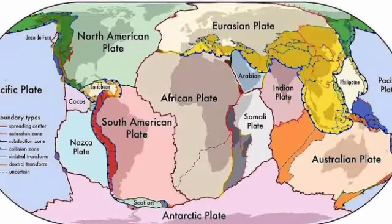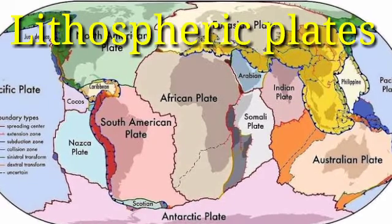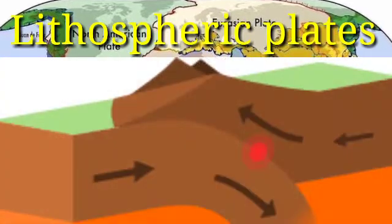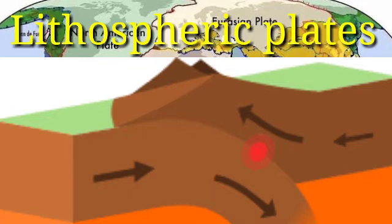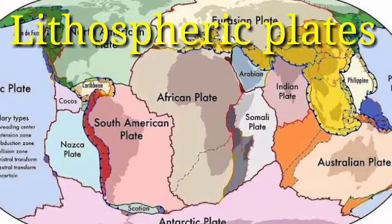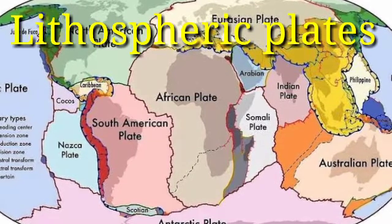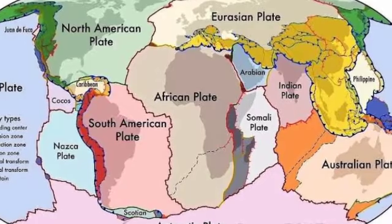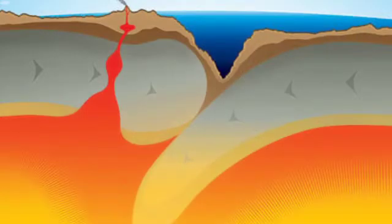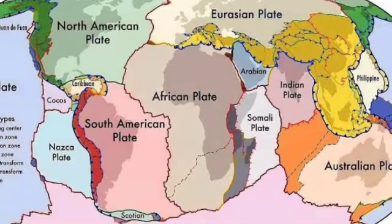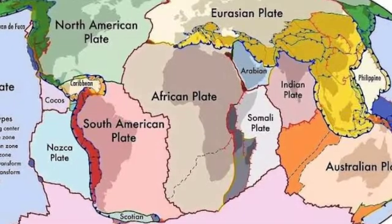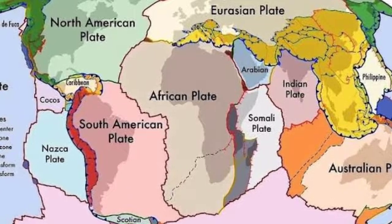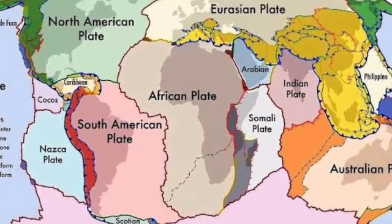To understand endogenic forces, we first need to understand plate movements. Earth's lithosphere — the land part of the earth — is divided into seven major and some minor lithospheric plates, which move very slowly. Their movement is just a few millimeters each year.